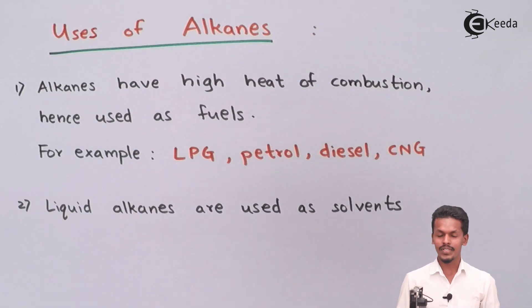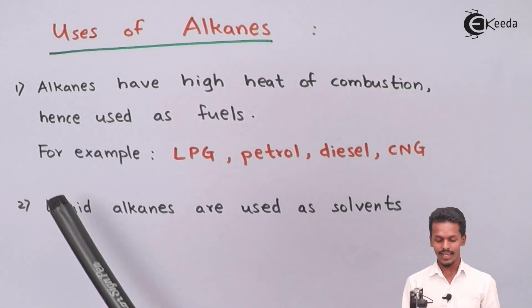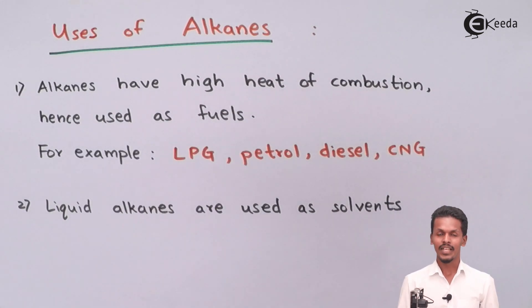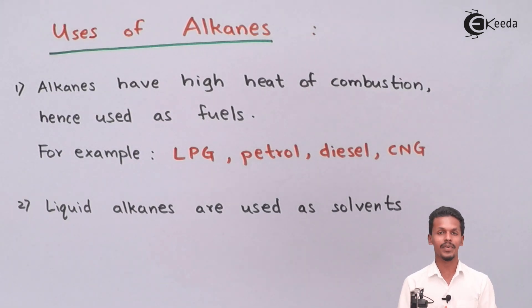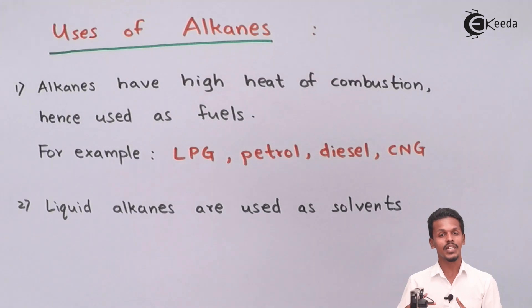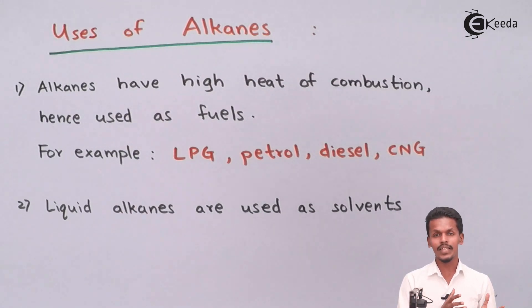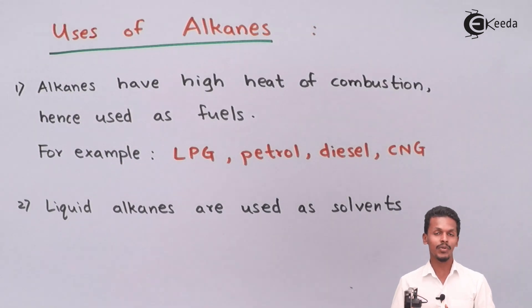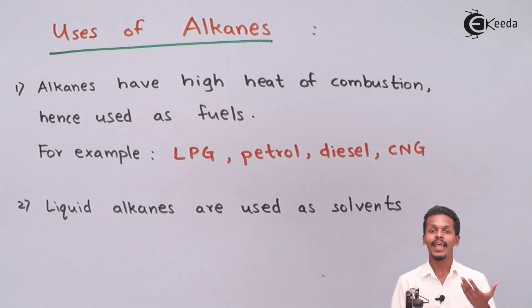The first use is that alkanes have high heat of combustion and hence are used as fuels. As we learned in the chemical properties of alkanes, an alkane undergoes a combustion reaction producing a tremendous amount of heat. It consists of carbon and hydrogen, and when those bonds break, carbon dioxide and water molecules are formed — and that's why heat is also produced, making the combustion reaction an exothermic reaction.